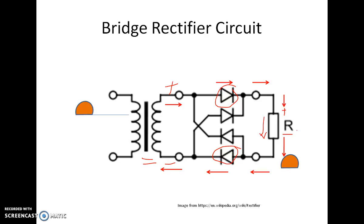Negative half cycle. In the negative half cycle the polarity across the secondary will be negative positive.